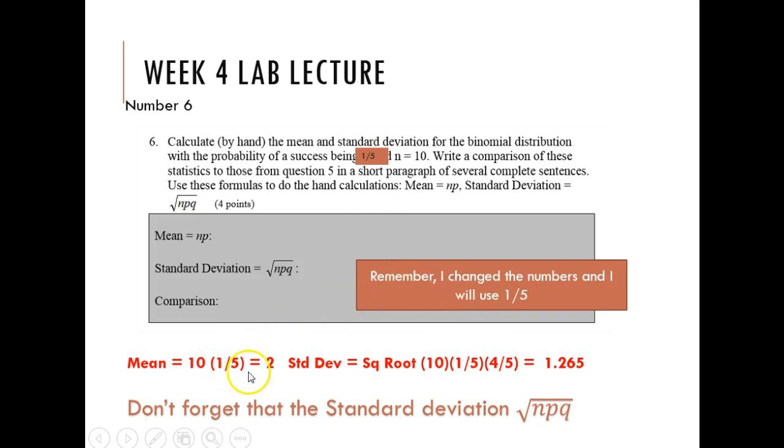Ten times one-fifth is equal to two. Standard deviation is the square root of 10 times one-fifth times four-fifths. Again, the four-fifths is q. One minus one-fifth is four-fifths. Take the square root of that. I get 1.265 rounded to three decimal places.